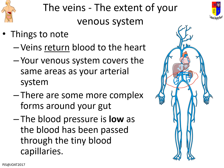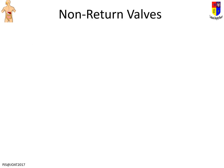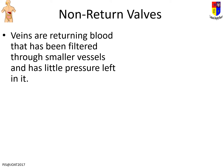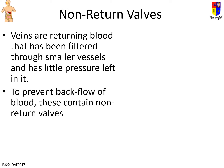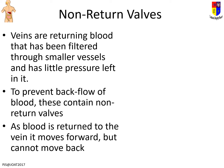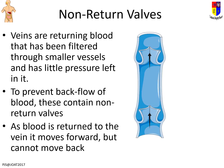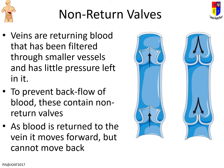Low blood pressure causes a problem: blood can go backwards. If you have blood in your big toe, how do you get it back up to the heart without it constantly falling back down? The answer is valves. Just as the heart has valves to stop backflow, veins have non-return valves. Blood moves up through these valves but cannot go back down, so even at low pressure blood constantly moves upward through the veins.